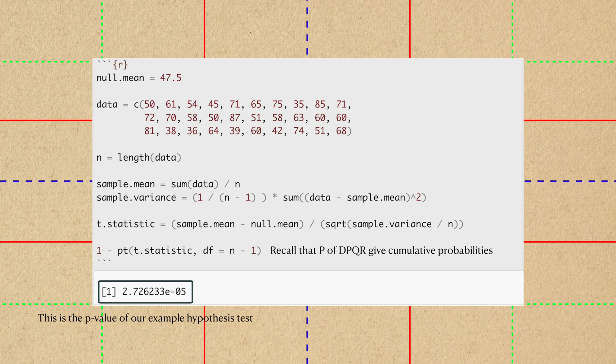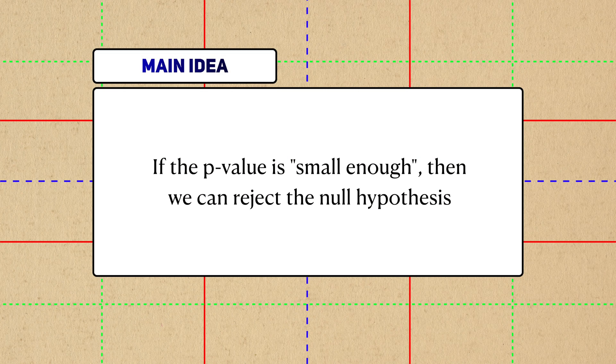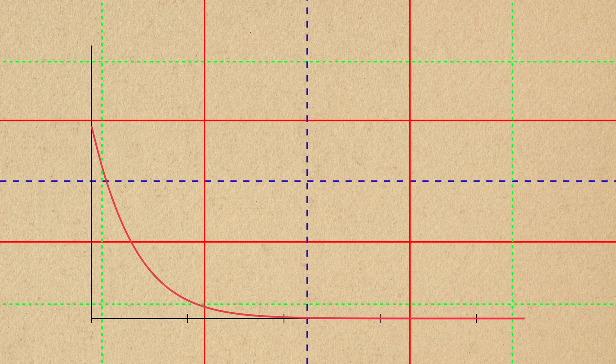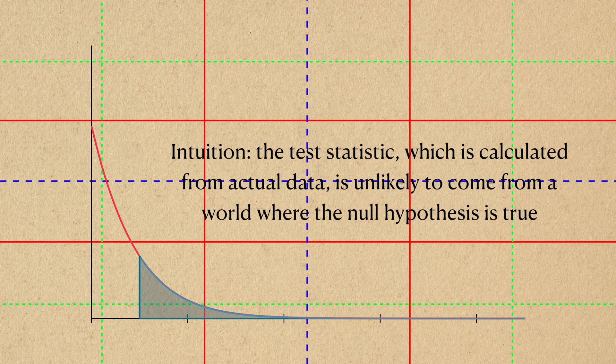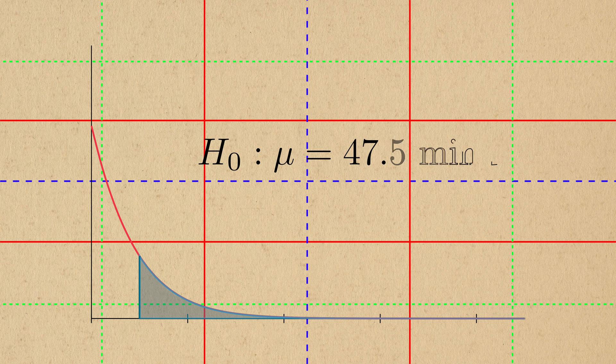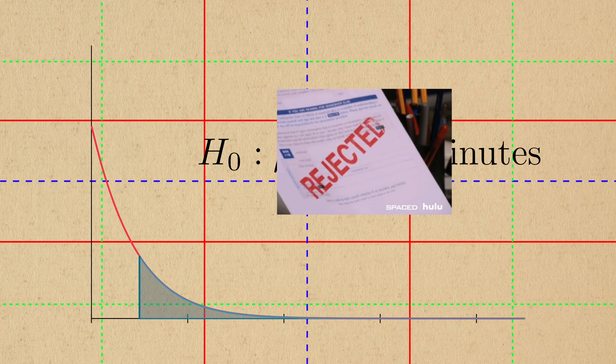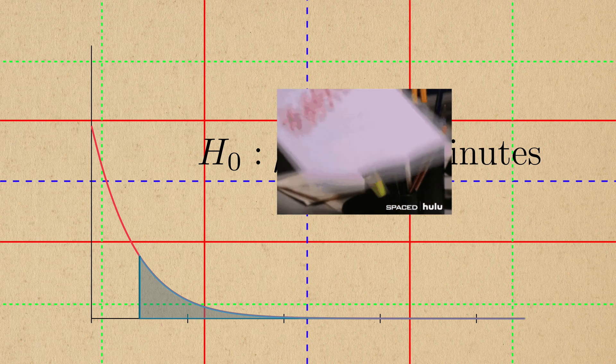So we make our data-driven decision based on this p-value. If this p-value is small enough, then we can reject the null hypothesis. The test statistic we derive from the real world is unlikely to come from a world where the null distribution is true. So, based on the data we collected, we reject the null hypothesis that the average YouTube watch time is 47.5 minutes.